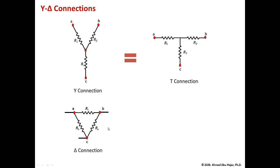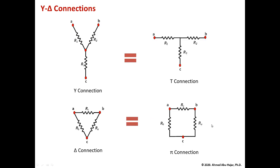Those three resistors can also be drawn as what we call a pi-connection. The pi-connection is the same as the delta connection. We have RC, RB, and RA drawn in a horizontal and vertical fashion, just like the T connection represents the Y. So the T represents the Y, and the pi represents the delta — they are the same connections drawn differently.